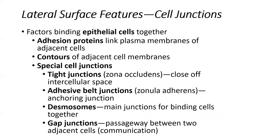At the lateral domain or at the lateral surface of the cells, we typically have what we call cell junctions. These are components or structures that help to link one cell to the other. There are four types of cell junctions that we're going to talk about, and they all have a different structure, are located at a different part of the lateral domain, and have a different function.